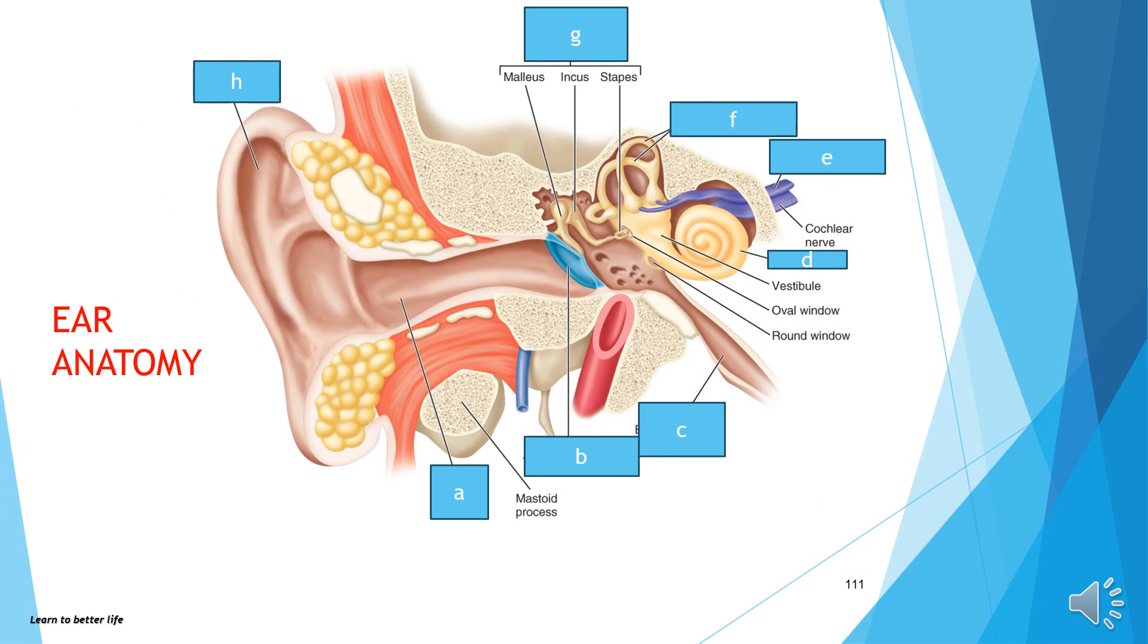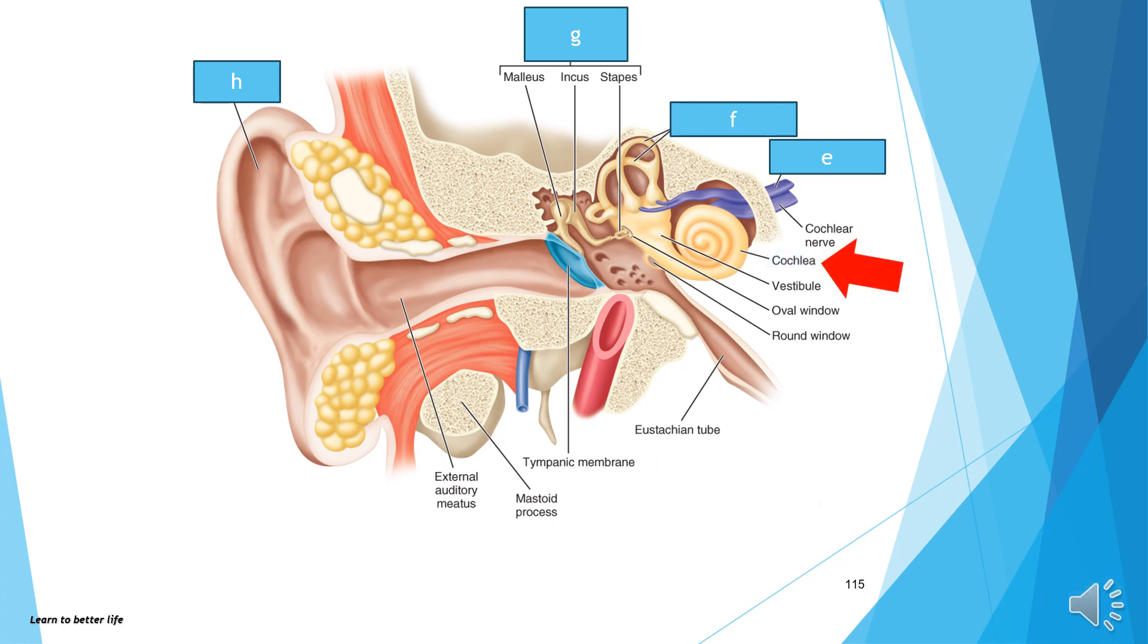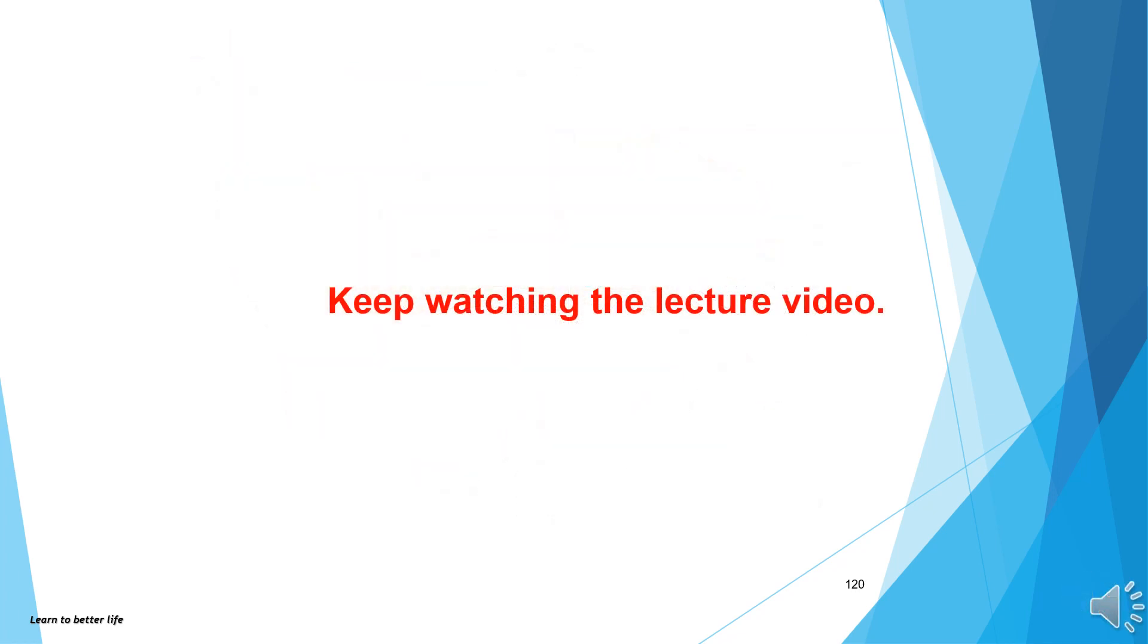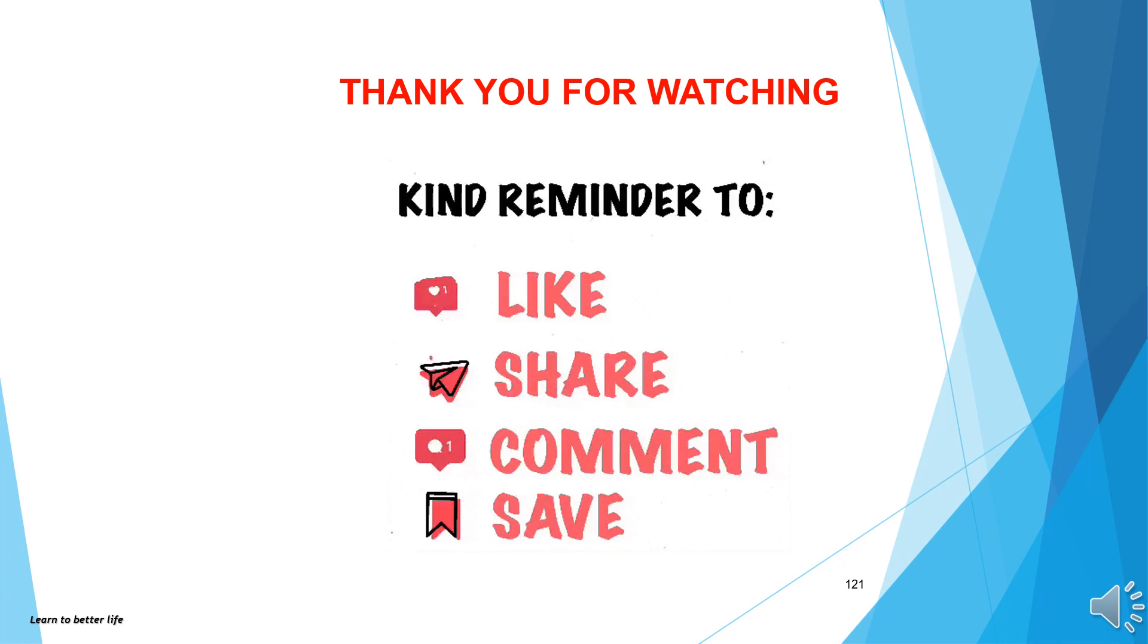Now, let's learn the ear anatomy. A is the external auditory meatus. B is the tympanic membrane. C is eustachian tube. D is cochlea. E is vestibular nerve. F is semicircular canals. Keep watching the lecture video.